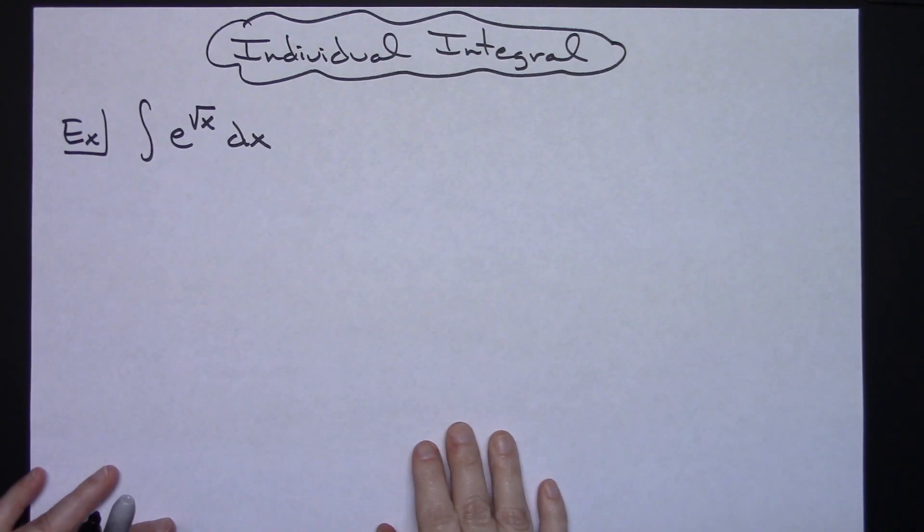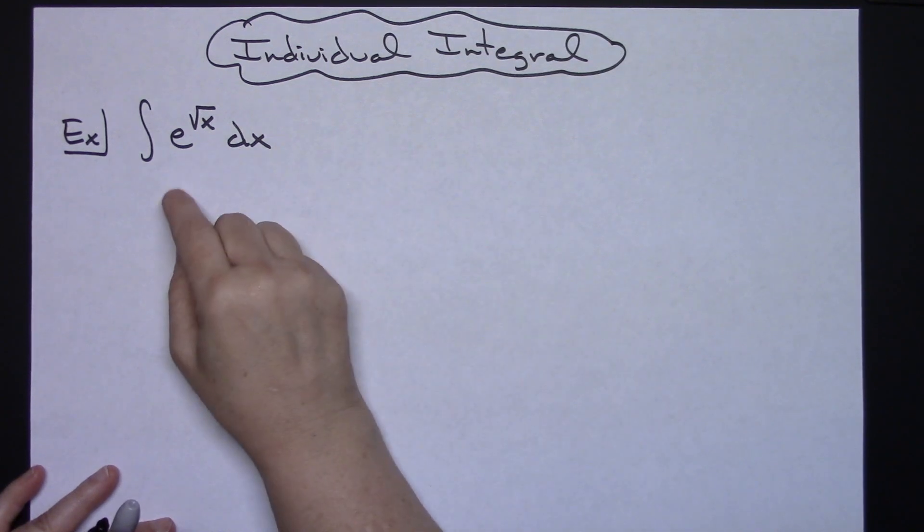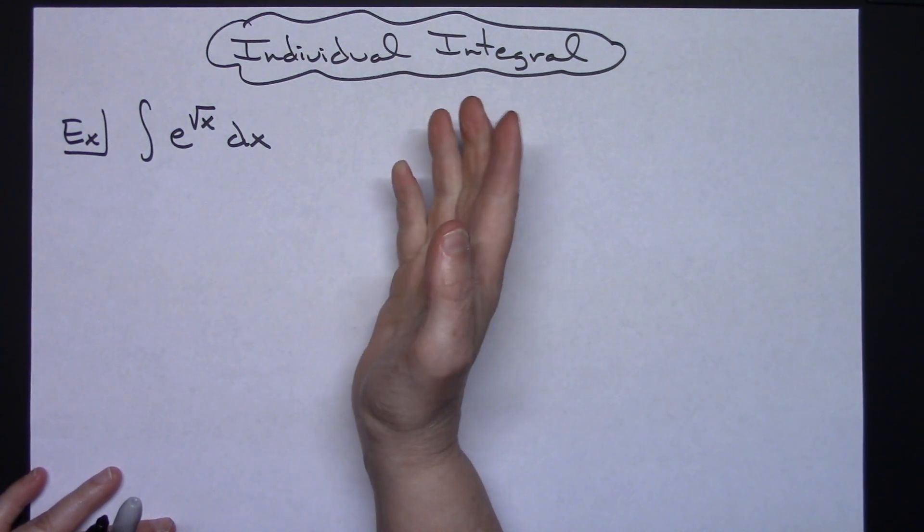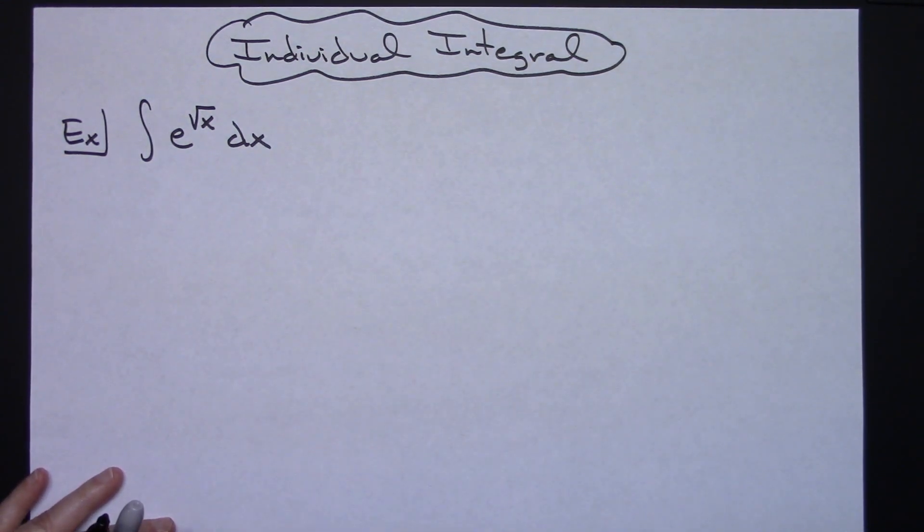In this video I'm going to be working out an individual integral. It is the integral of e raised to the square root of x dx, which is going to be a relatively straightforward u substitution, but we are going to have to do an integration by parts and I am going to do a shortcut method on that.